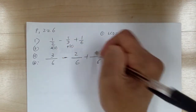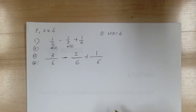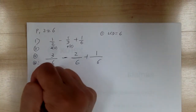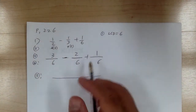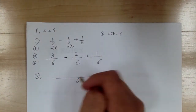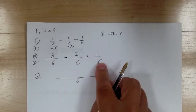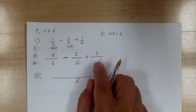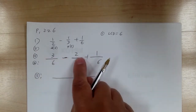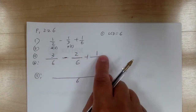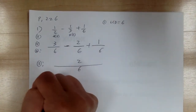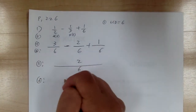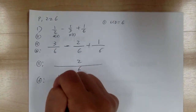This last fraction stays the same; you don't do anything to it. Then step five, put everything together. Once you have a common denominator you can combine: three minus two is one, plus one is two. Step six, simplify — you get two-sixths, which equals one-third.